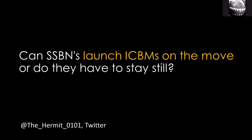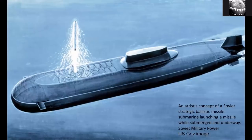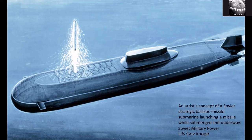Can SSBNs — Nuclear Powered Ballistic Missile Submarines — launch submarine-launched ballistic missiles on the move, or do they have to stay still? The easy way to answer that is with this brilliant picture I found from the Soviet Military Power series from the 80s — it shows a missile launch while underway and submerged. Yes: ballistic missile submarines can and do launch their missiles while going along underwater. They can also do it on the surface, and if they're able to hover or stay still in the water, they can do it that way too. But they can absolutely shoot their missiles while underway — in fact, it's quite normal.